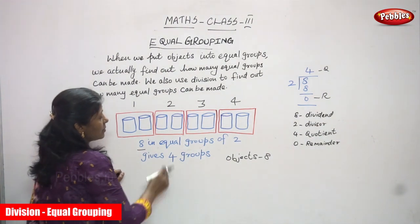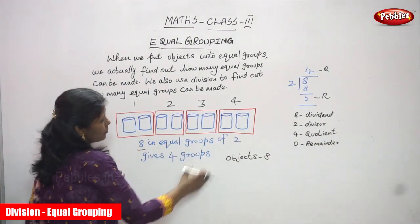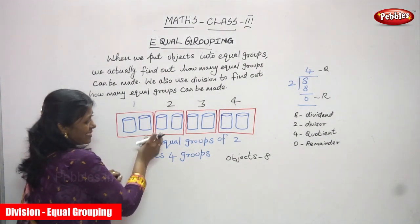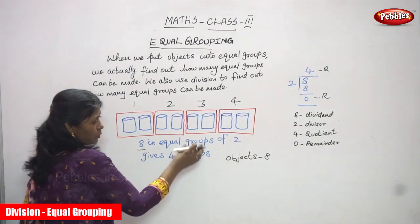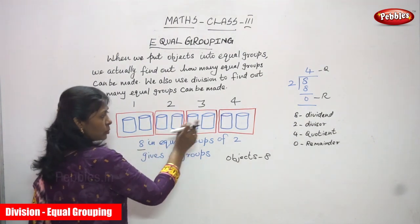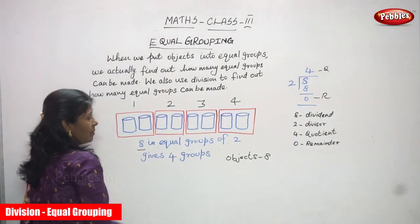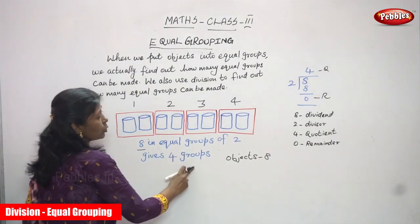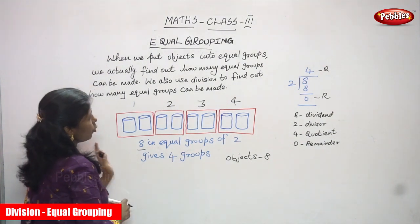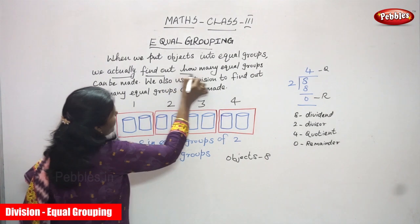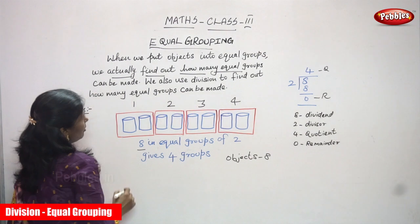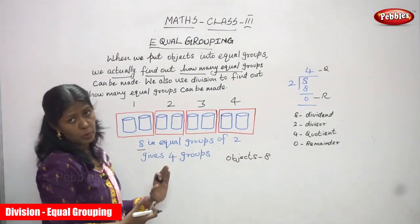The total is 8 cylinders, divided into equal groups of 2. In each group I put 2 cylinders. First group: 2 cylinders, second group: 2 cylinders, third group: 2 cylinders, fourth group: 2 cylinders. So how many groups did I get? I got 4 groups — 4 equal groups.